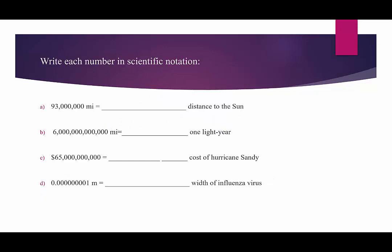We want to write each of these numbers in scientific notation. The first one is the distance to the sun, 93 million miles. So again, what we want to do is think about how many times we're moving the decimal point. And then the number of times we move the decimal point, that's going to tell us what the power of 10 is. So we know it's going to be something times 10 to the something.